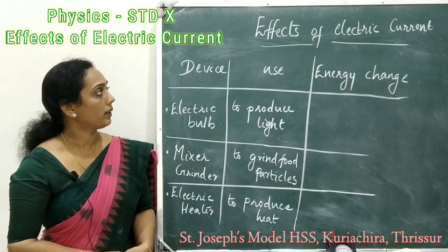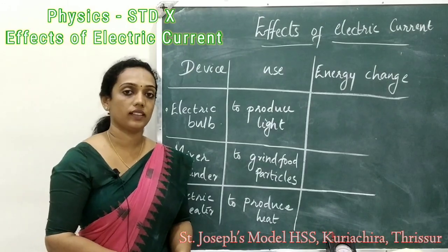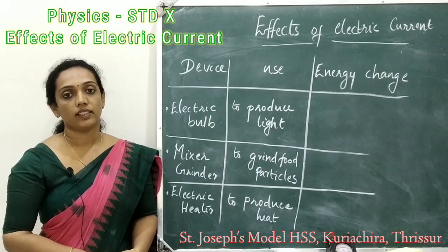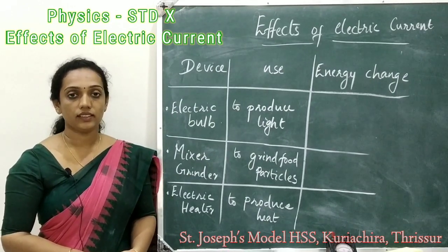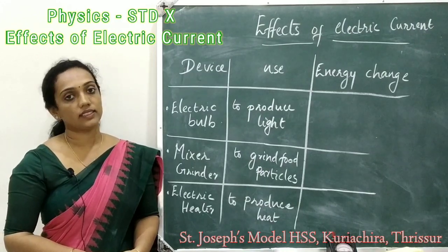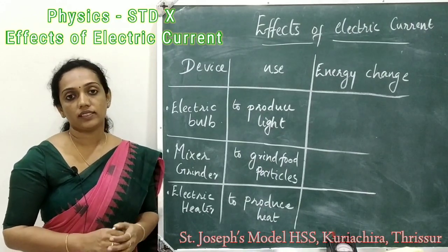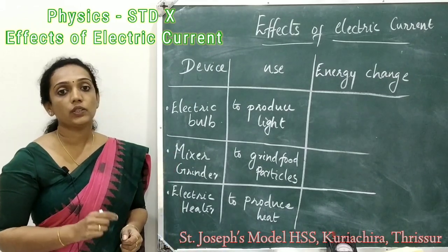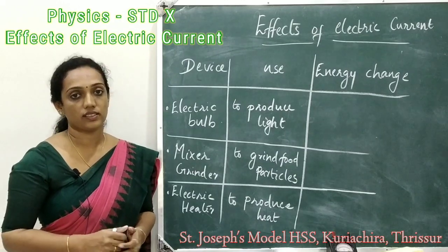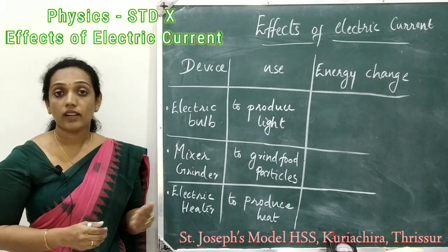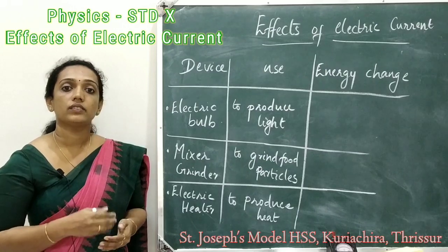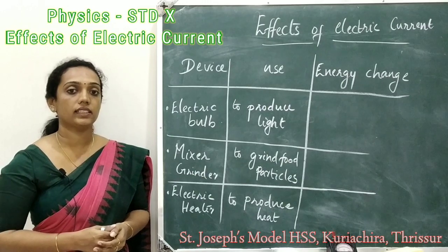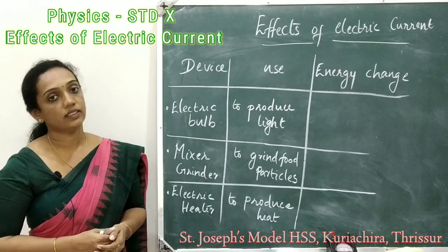Now we move to our topic: Effects of Electric Current. We use many electrical devices in our daily life — electric bulb, electric heater, induction cooker, electric fan, etc. All these devices need electrical energy for their working, but each device has distinct functions, and these devices convert electrical energy into various forms of energy. Let's discuss the energy changes in some of these devices.